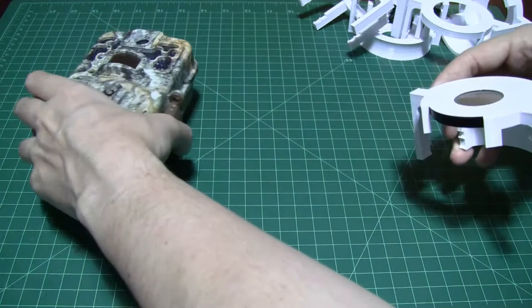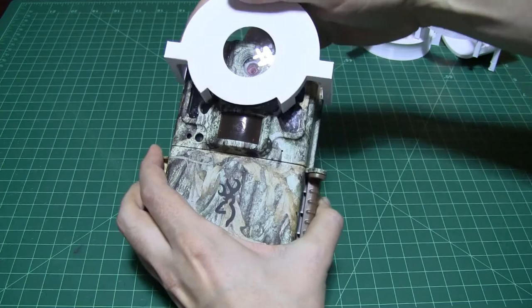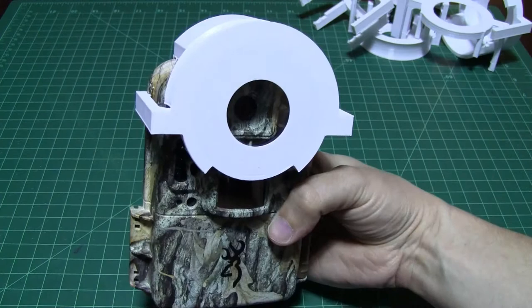So we take our camera here, we just snap it into place, and then we should be pretty good to go. So this lens is a little bit large. It kind of covers up those IR LEDs that help with night vision.